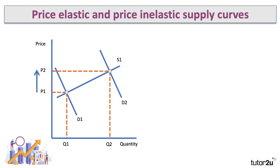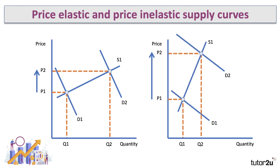So how do we draw a price inelastic supply curve? There it is — a much steeper curve. Demand has shifted out from D1 to D2 on the right-hand side, and suppliers found it difficult to increase supply to meet higher demand.